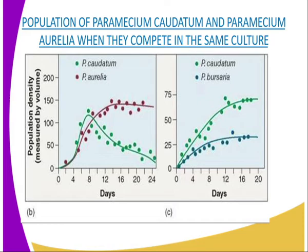Looking at graphs B and C, closely related species can live together without competition. For example, when Paramecium caudatum and Paramecium bursaria are grown in the same culture, each occupies a different part of the culture where it can feed on bacteria without competing with the other species.